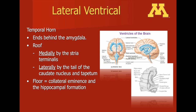The temporal horn lies within the temporal lobe. This is a very important structure as the hippocampus forms the medial border of the temporal horn, as seen in the bottom right picture. One can see the hippocampus with the head, the body, and the tail. The head of the hippocampus has a very characteristic appearance that looks like a lion's foot. One can also appreciate how the hippocampus forms the inferior and medial wall of the temporal horn of the lateral ventricle.